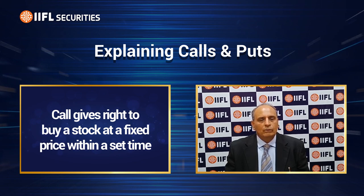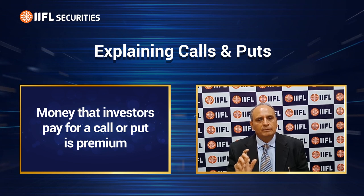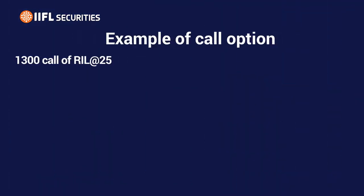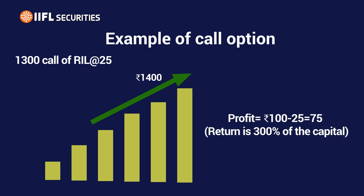If you are bullish on the market, on a stock, or an index, you will buy a call which allows you to participate without any margin — all you are paying is the premium priced into the option. Your maximum loss is the option premium paid. For example, if you bought a 1300 call of Reliance when the price was 1280, at 25 rupees, and the stock went to 1400, you stand to make 100 rupees minus 25.